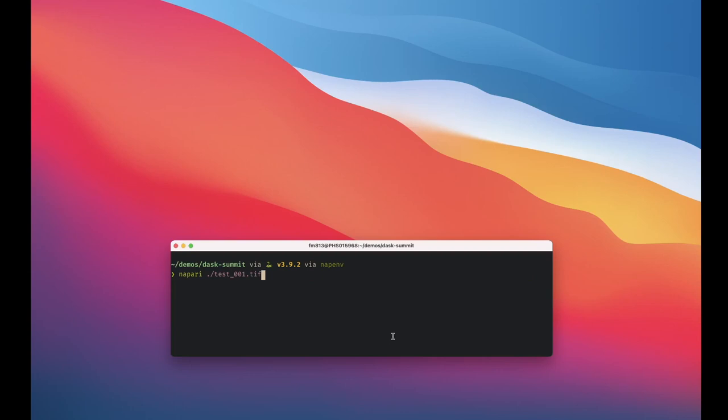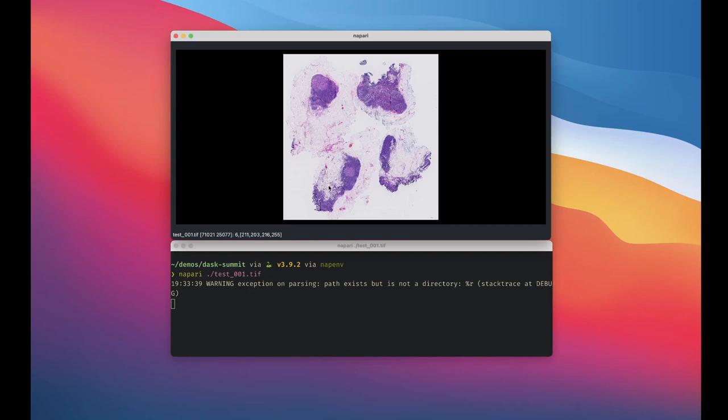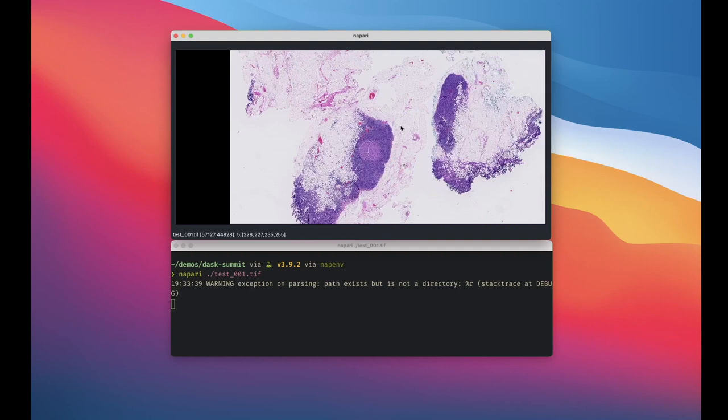Here I have an image installed locally, which is a whole slide image, and I'll open it with the Napari Lazy OpenSlide plugin. This has created the OpenSlide store, which ultimately powers this interactive view with the Dask arrays on top.